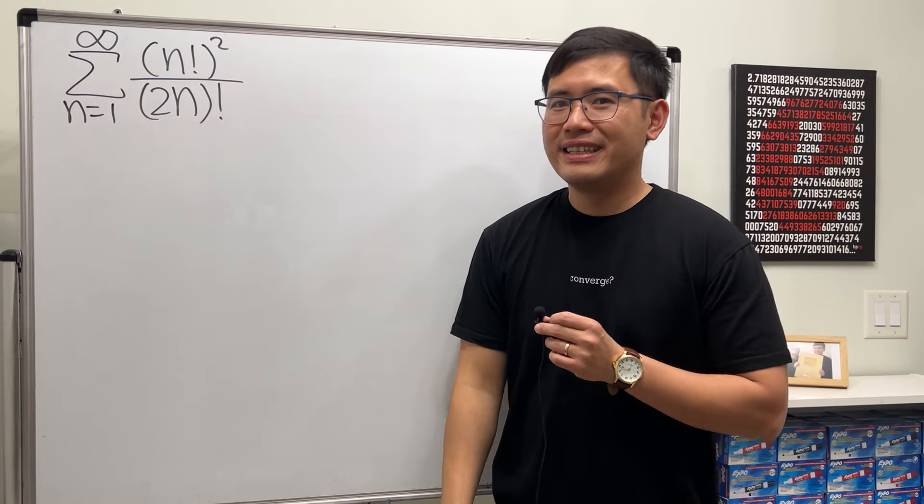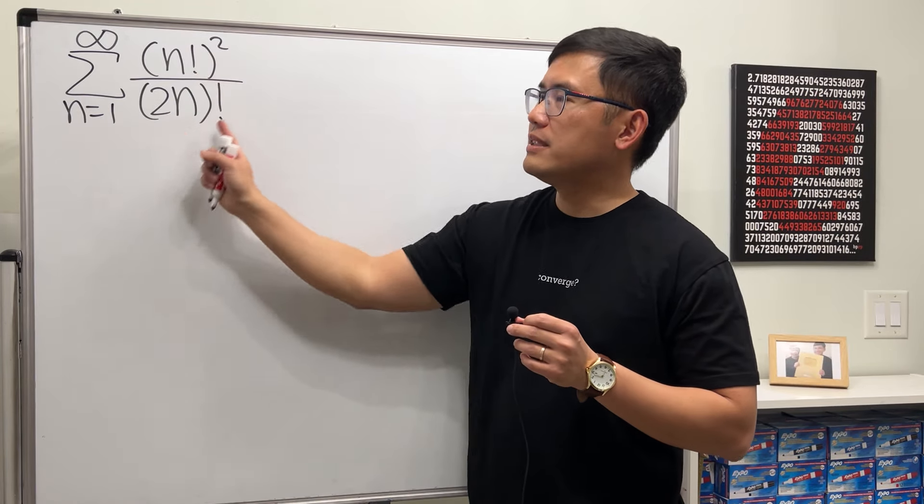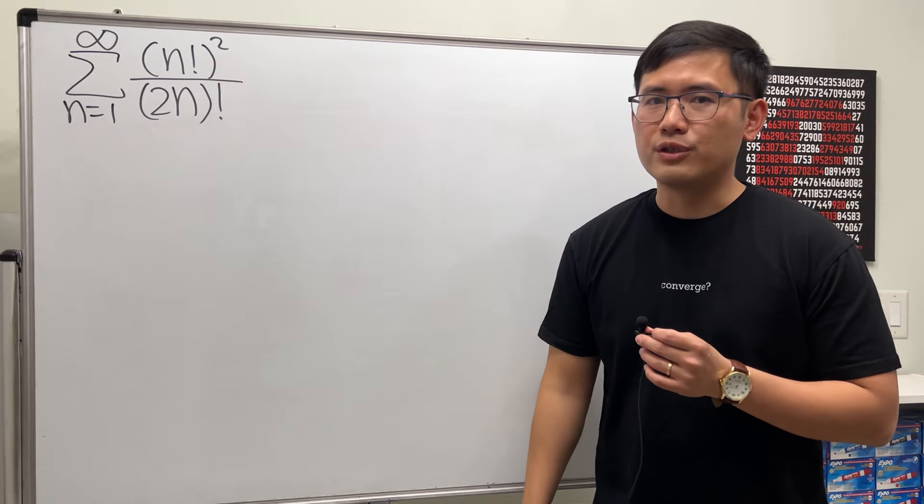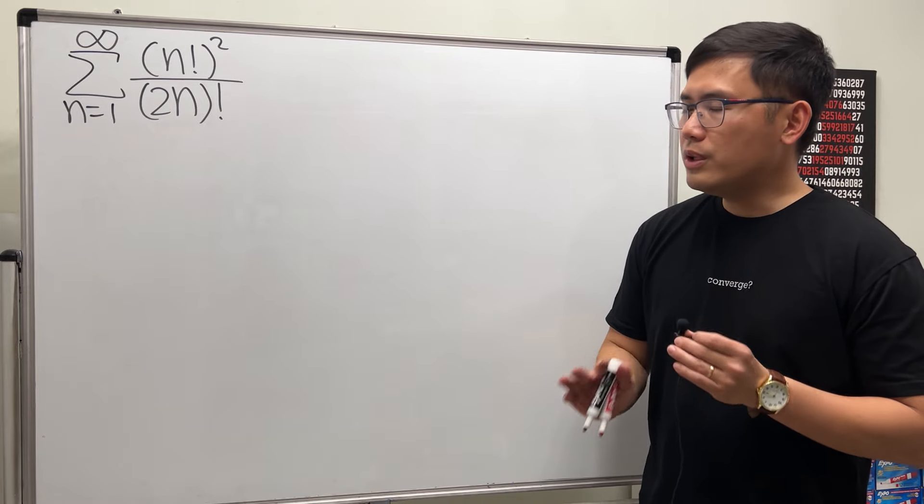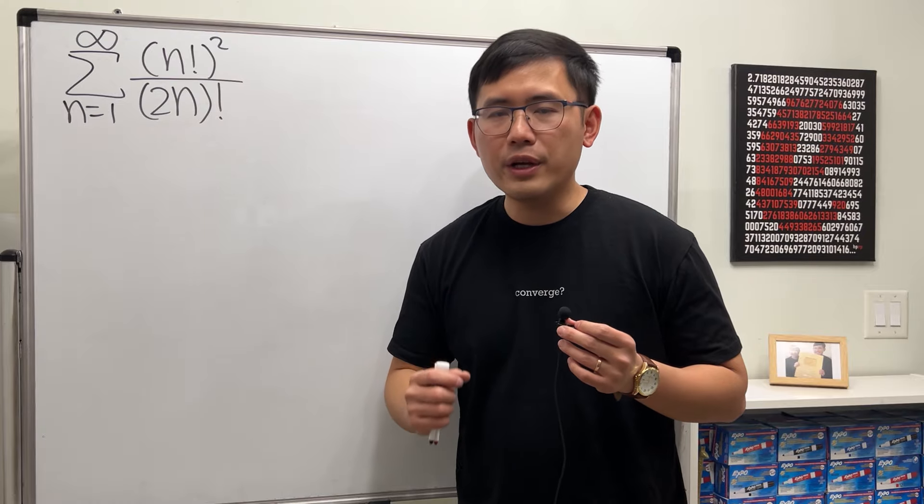If you want to try the limit test, if you take the limit of this as n goes to infinity, I will tell you that will equal zero, so the test for divergence doesn't work. But you don't need to worry too much though, for this one here I think there's a very clear indication that we should use the ratio test because of the factorial.